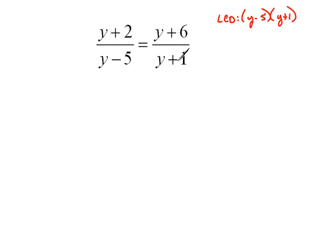So what we're going to do is multiply both sides by this least common denominator, the same thing we did in the example before. Now, rather than rewriting this problem, since there's only one term on either side, I'm just going to multiply both sides by y minus 5 times y plus 1. So I'm just going to show that here: y minus 5 times y plus 1.